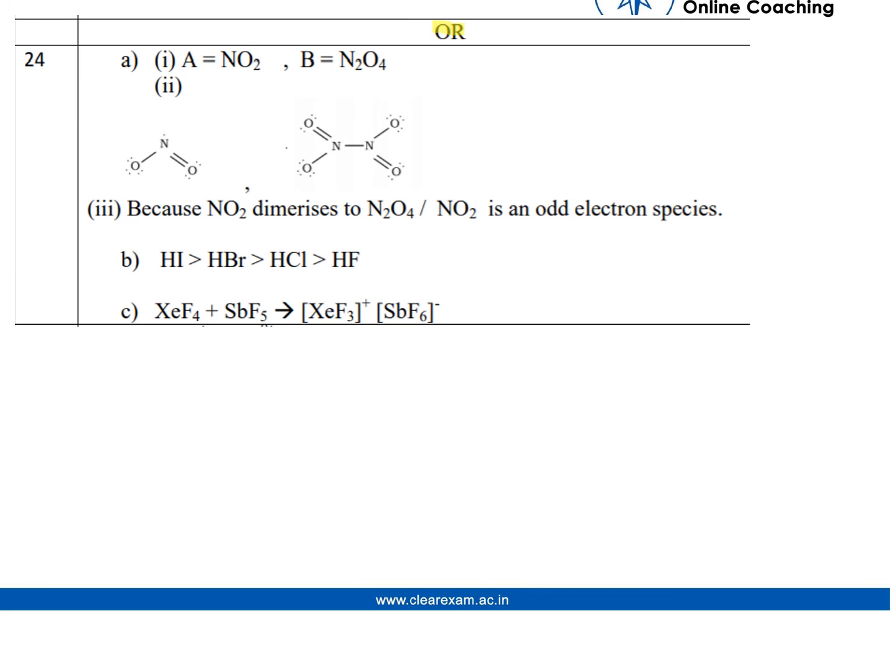For the OR part of the question, according to the question, the brown gas which was formed, A, is NO2, and the colorless solid is N2O4. The second part was we have to write the structures of NO2 and N2O4. The structure of NO2 is this and the structure of N2O4 is this.